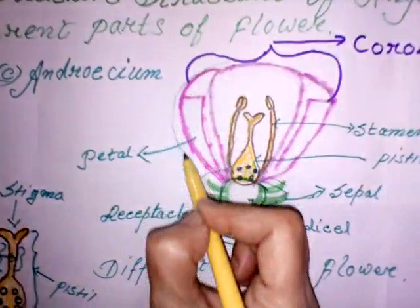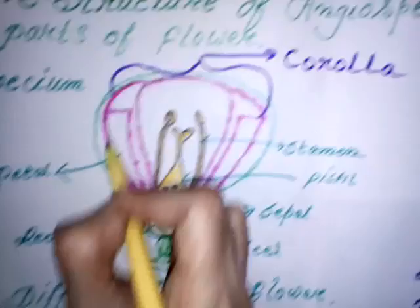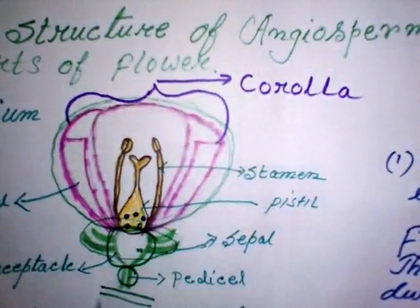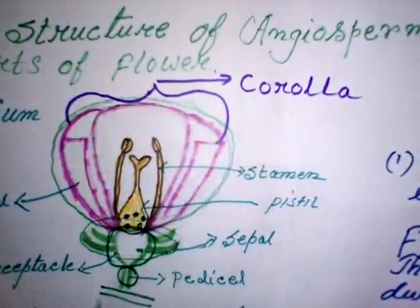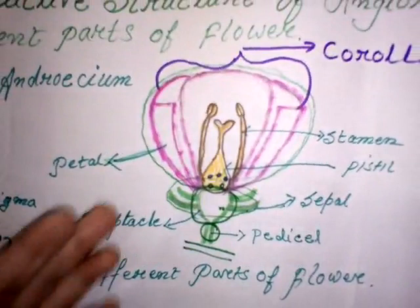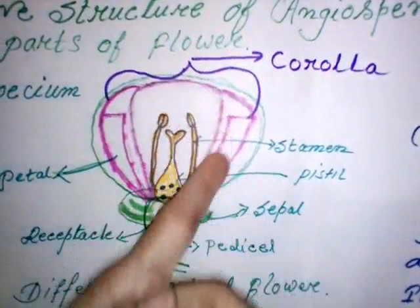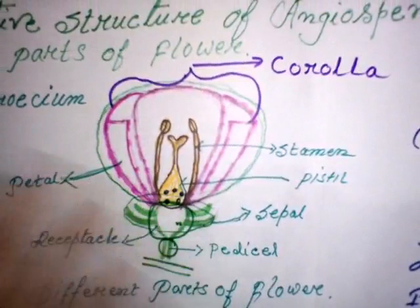The next inner, colorful and scented circle of the flower is known as corolla. I have represented it with the help of pink color. Each part of corolla is known as petal. Due to its color and fragrance, it attracts insects and thus helps in pollination. Besides this, it also protects stamen as well as pistil.